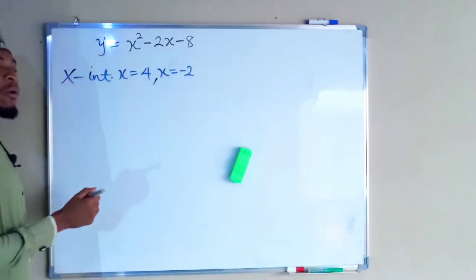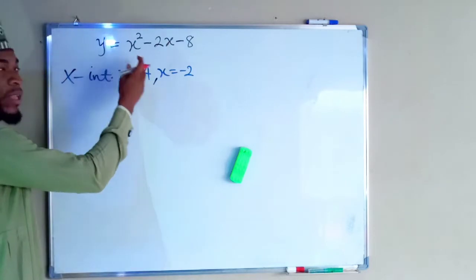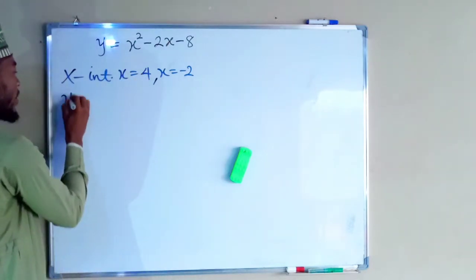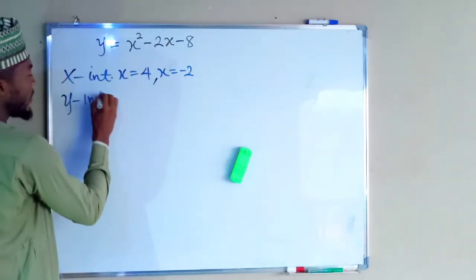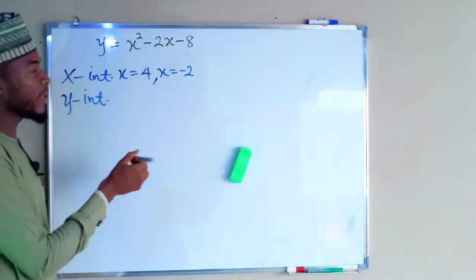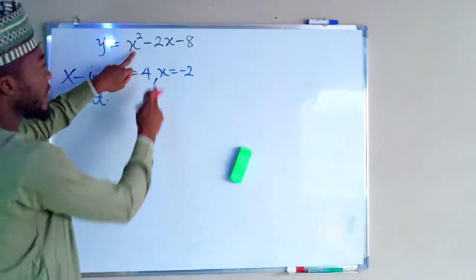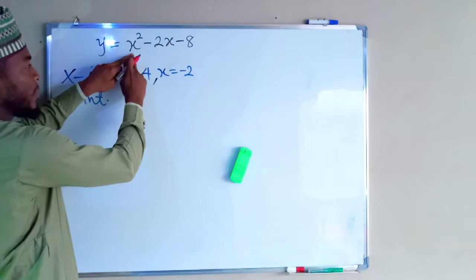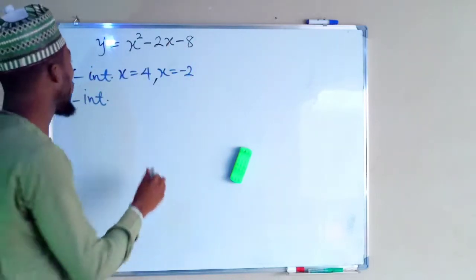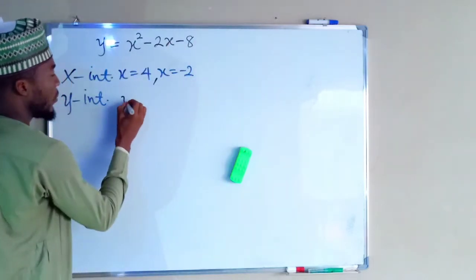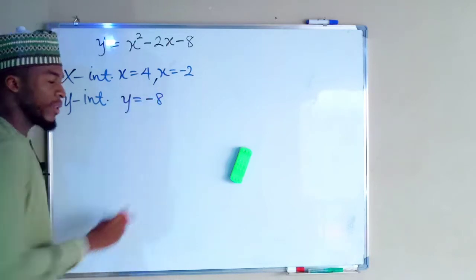Now I want to find the y-intercept by setting x equal to 0. When x equals 0, all terms with x become 0, except the constant term. So y will be equal to negative 8.